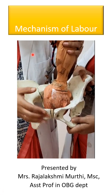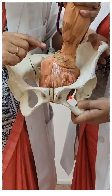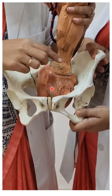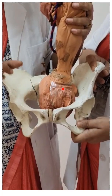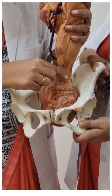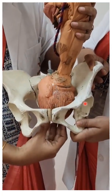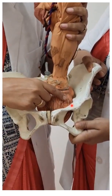Hi everyone. In this video we'll discuss the mechanism of labor. There are nine cardinal movements. I'm going to tell a simple way to remember them. We'll discuss the mechanism of labor using LOA — Left Occipital Anterior position.